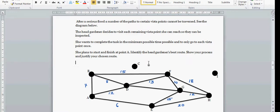After a serious flood, a number of paths to certain vista points cannot be traversed. These are points - vista points - and point C and point I cannot be traversed or cannot be reached. See the diagram below. These are the times it takes from Vista A to Vista B, B to F, and so on, in minutes.